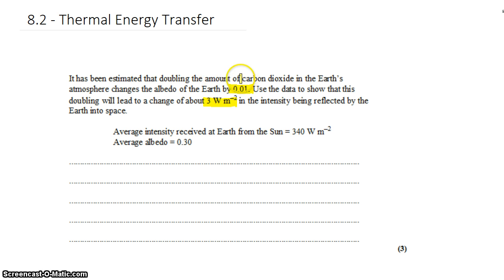Now, the question here is saying that if we double the amount of carbon dioxide, it's going to change the reflectivity, the albedo of the Earth, by 0.01. I guess the point of the question is trying to say that if we increase the amount of carbon in the atmosphere through fossil fuel emissions,